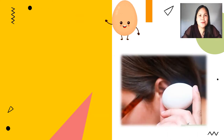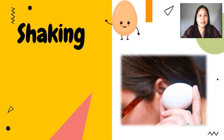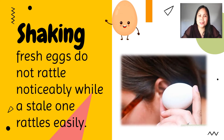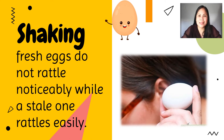One of the easiest methods to determine the freshness of an egg is by shaking. Fresh eggs do not rattle noticeably, while a stale one rattles easily. If you shake a fresh egg, you won't hear anything. If you hear liquid sloshing around, your egg is old. This is because older eggs have absorbed more air, allowing the white to move around inside the egg.